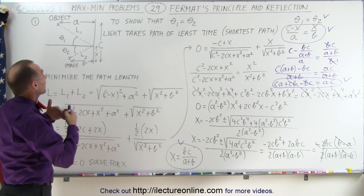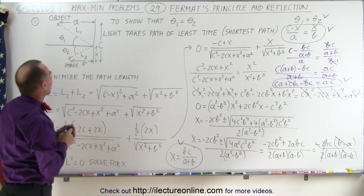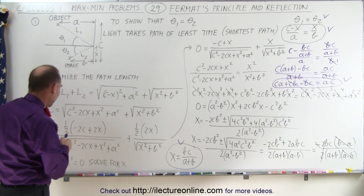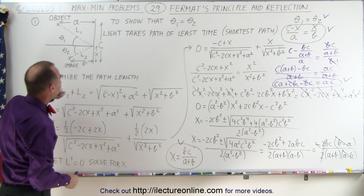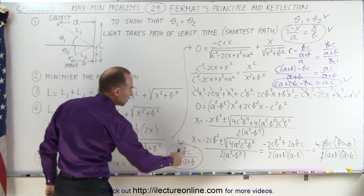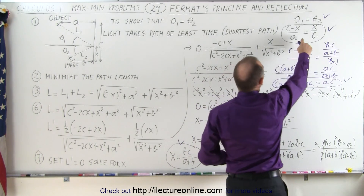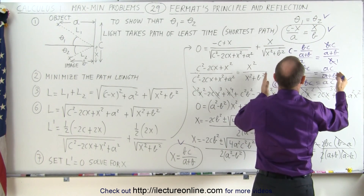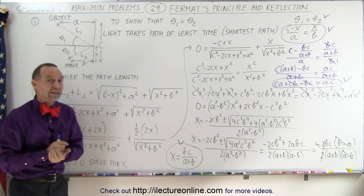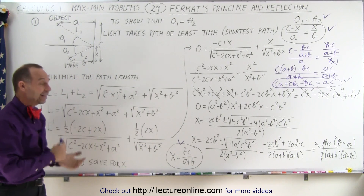Fermat came up with the idea that light must take the shortest path because it must take the path that takes the least amount of time. Using the max-min problem approach, we showed that to travel the shortest path, the point x where light hits the mirror must be bc divided by a plus b. When plugged into the equation where theta 1 equals theta 2, it confirms that this is indeed the case, proving that light reflected off a flat mirror has an angle of incidence equal to the angle of reflection.